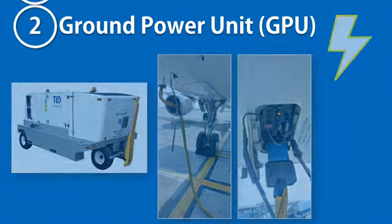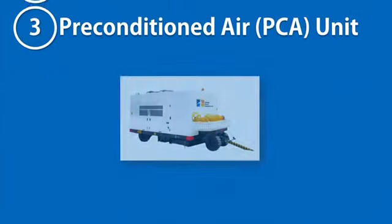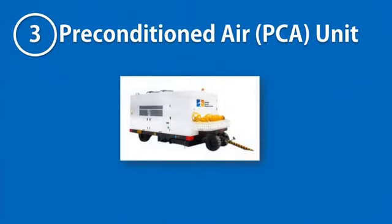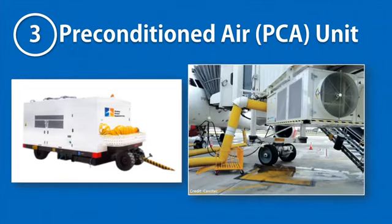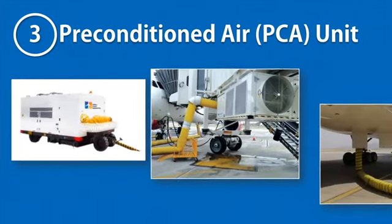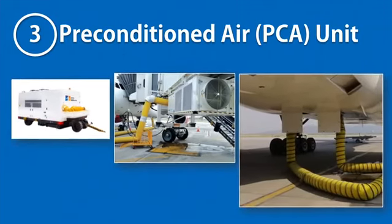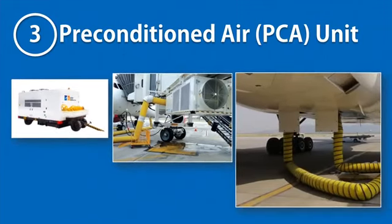A preconditioned air unit is a ground support equipment that supplies air conditioning to the aircraft on the ramp when its own air conditioning is off. In summers it provides cooling, and in winters it provides heating.